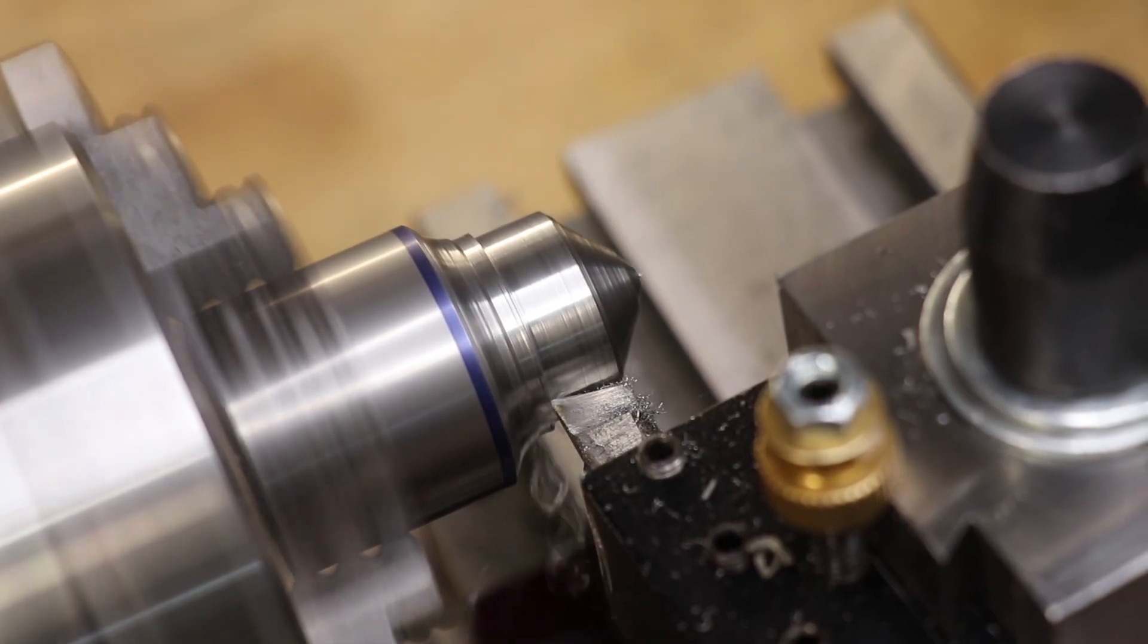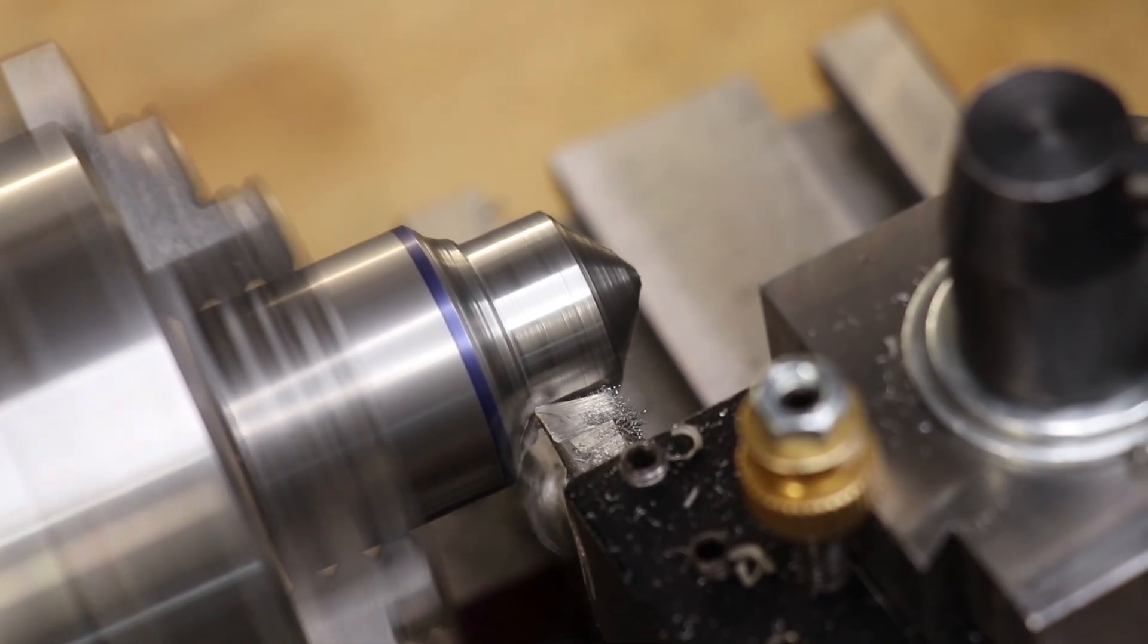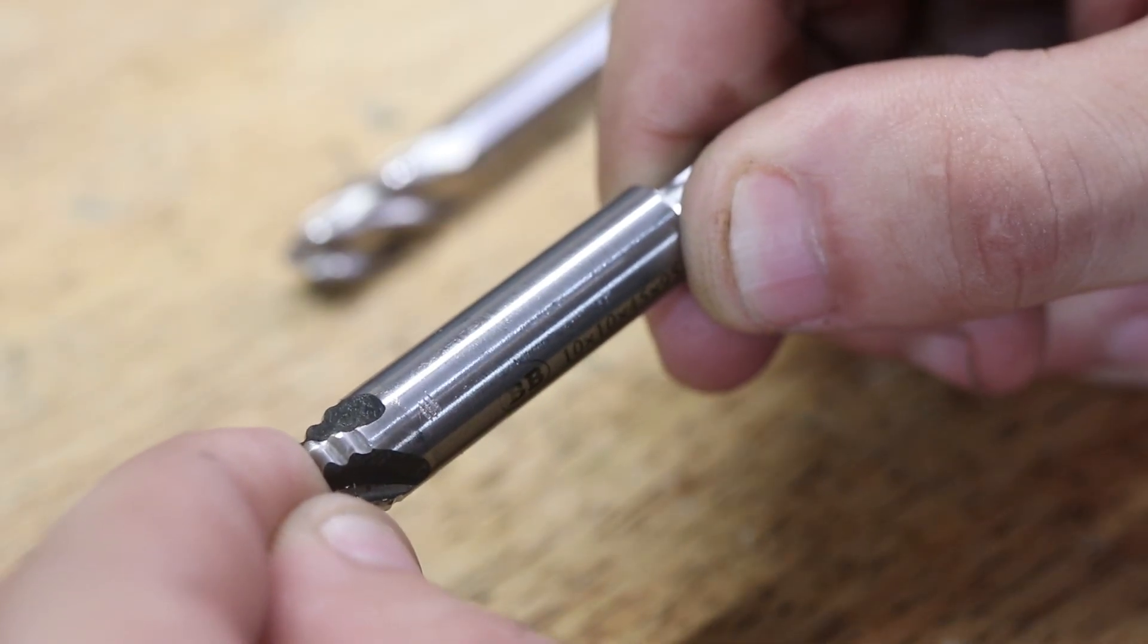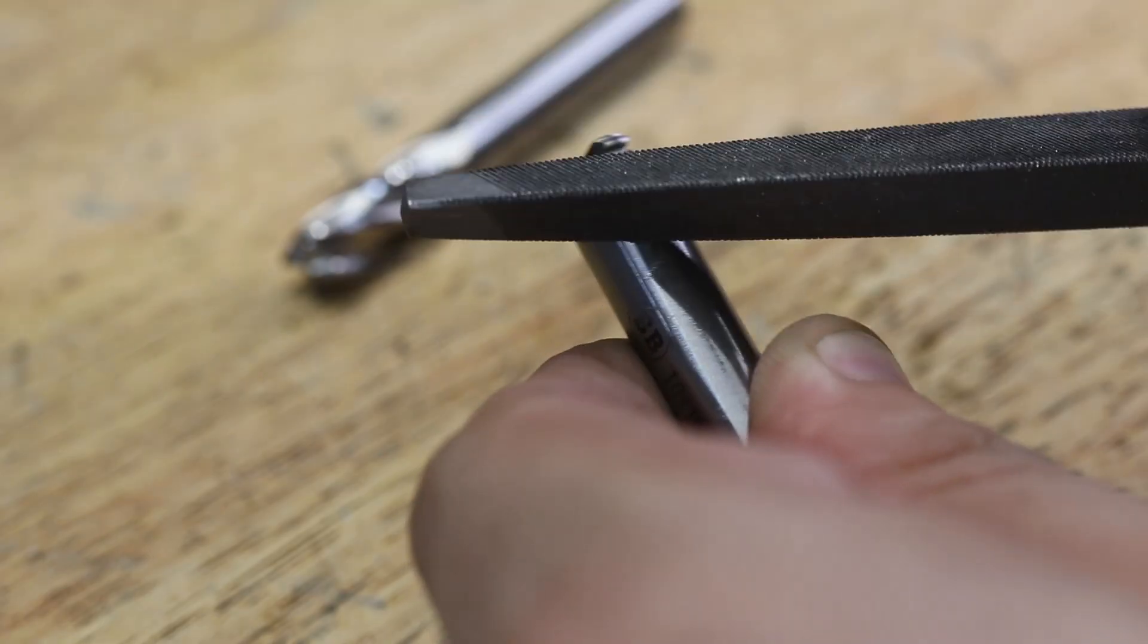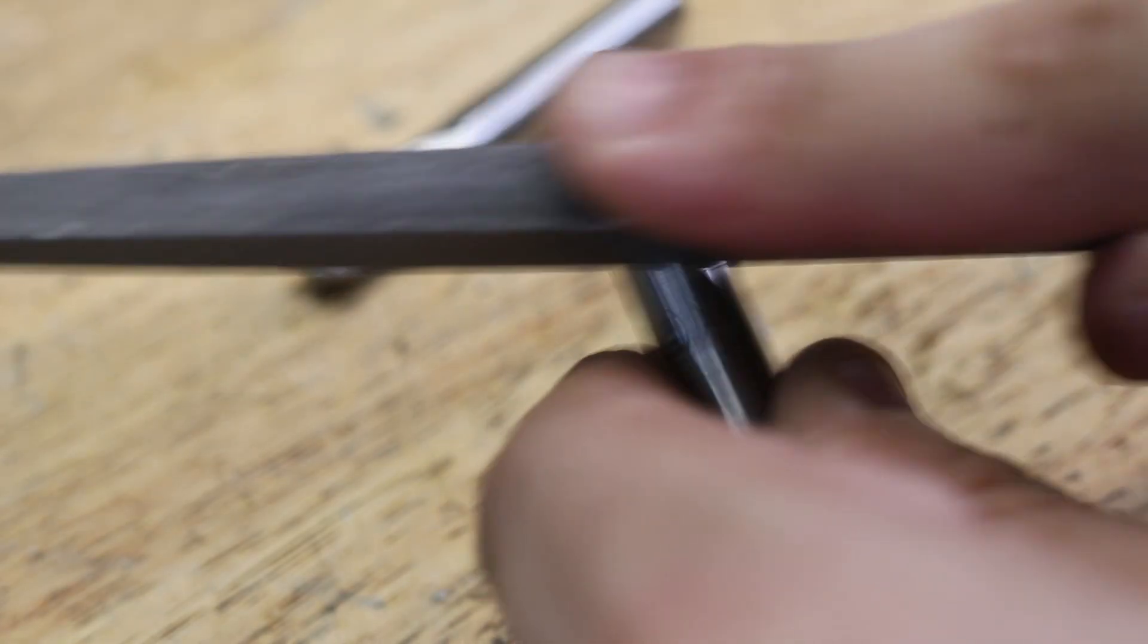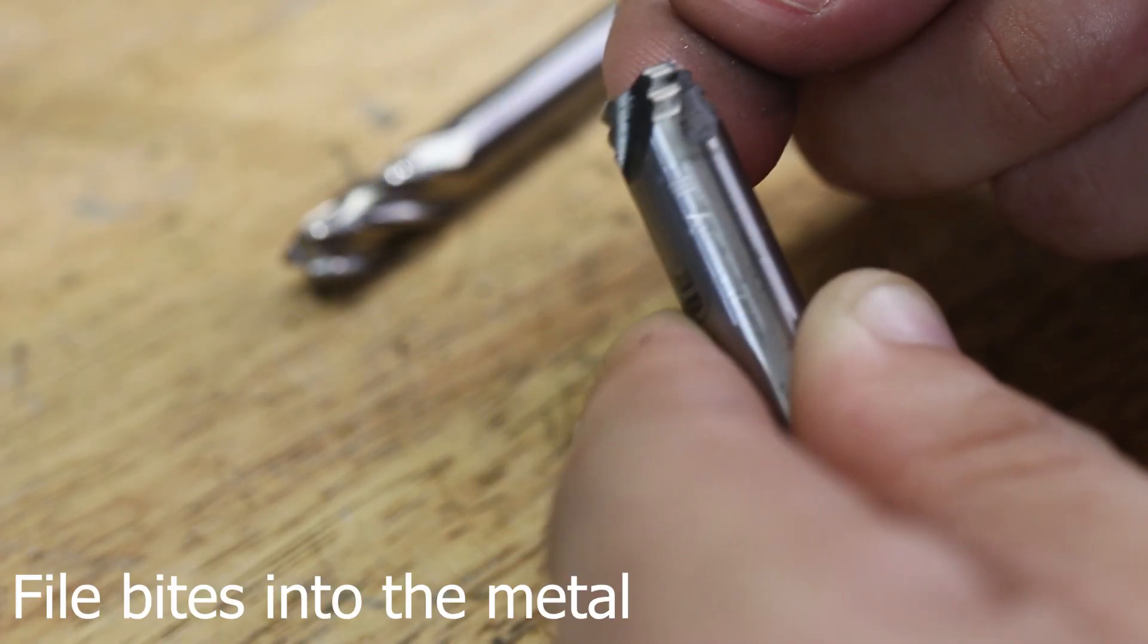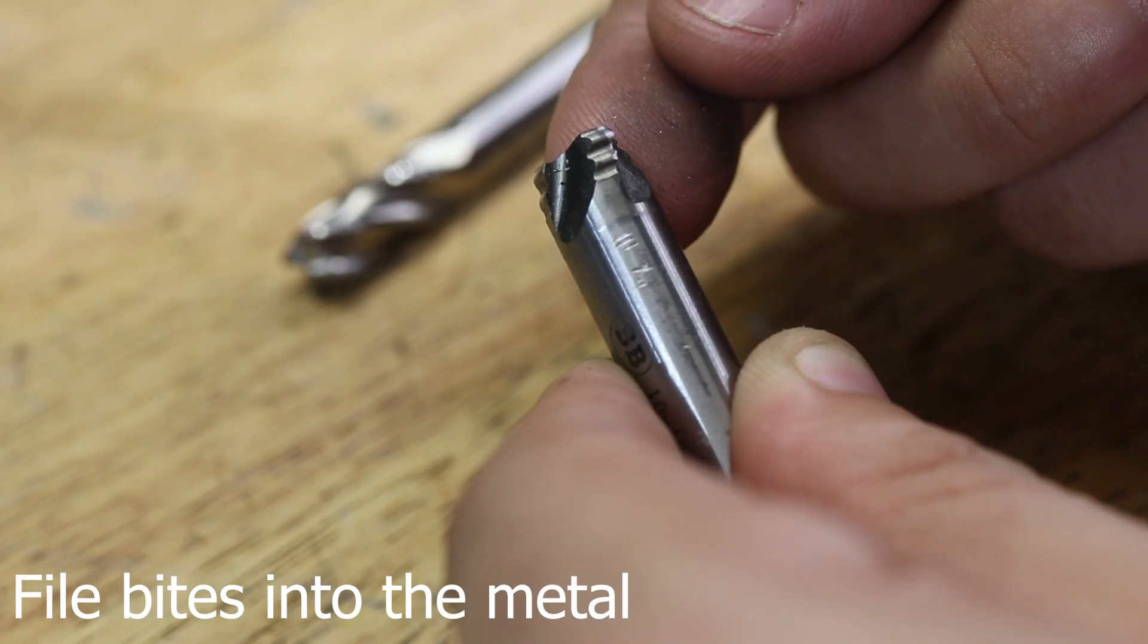The only real issue I might run into is the shanks of end mills aren't as hard as the flutes. It's high speed steel but it's not being heat treated to be the same hardness as the flutes. With that said you can certainly make good tools out of them. The tools do last they just don't last as long as say a properly hardened piece of high speed steel would last.